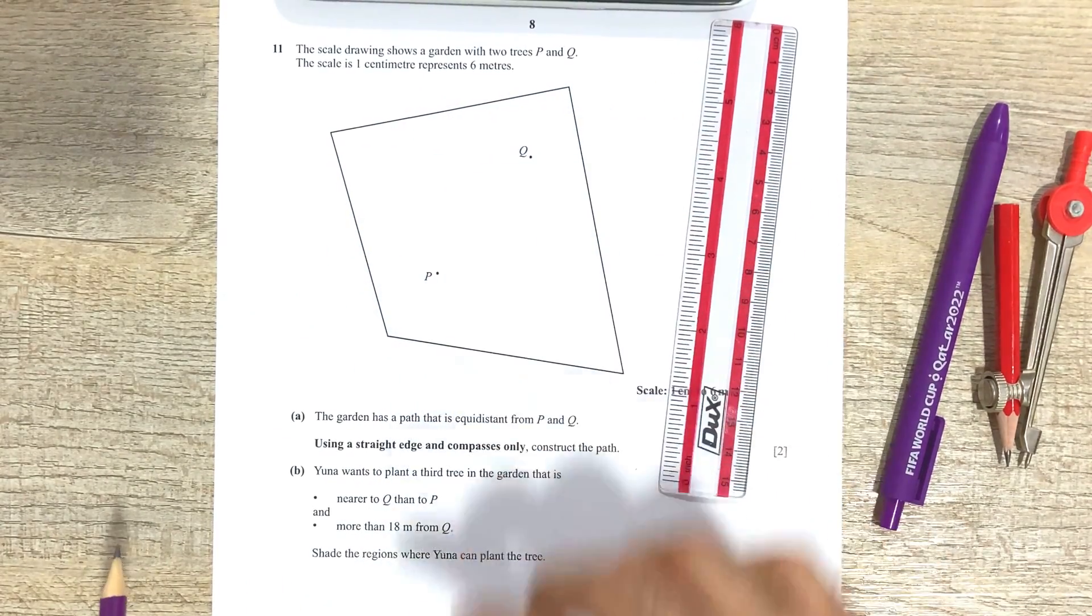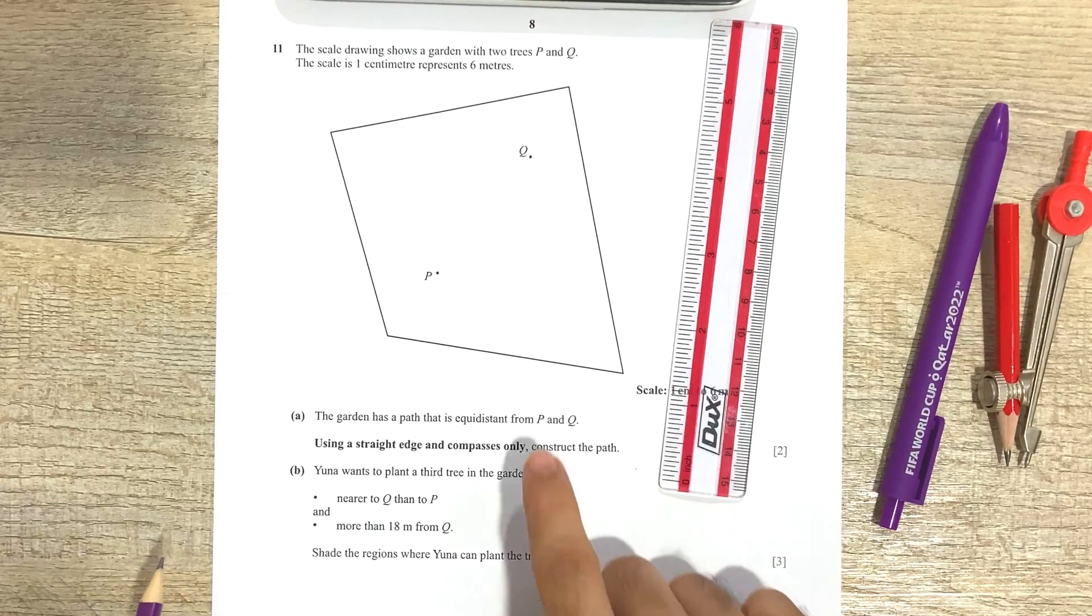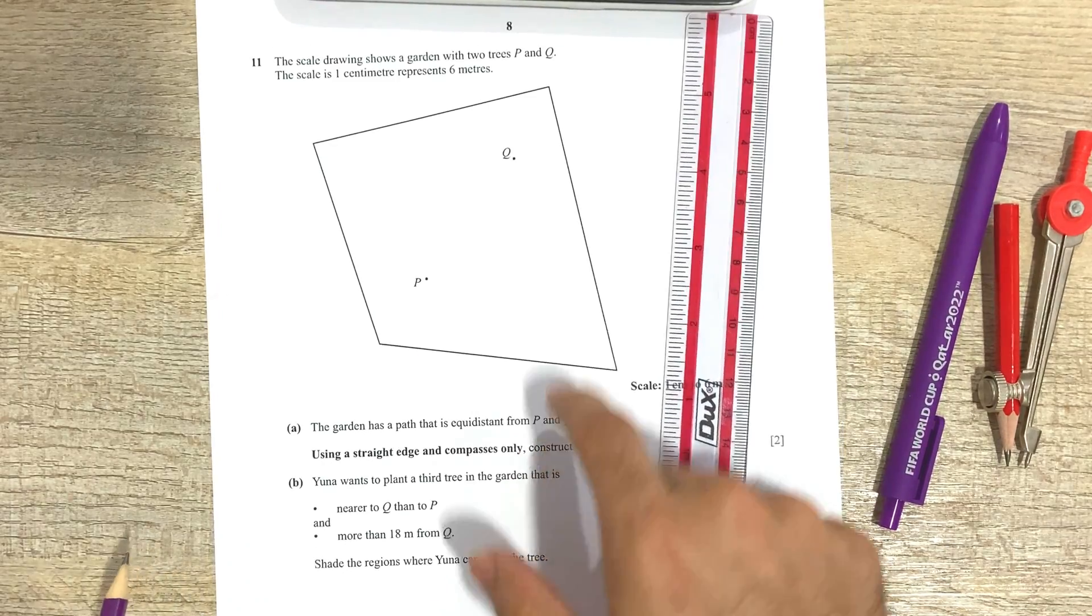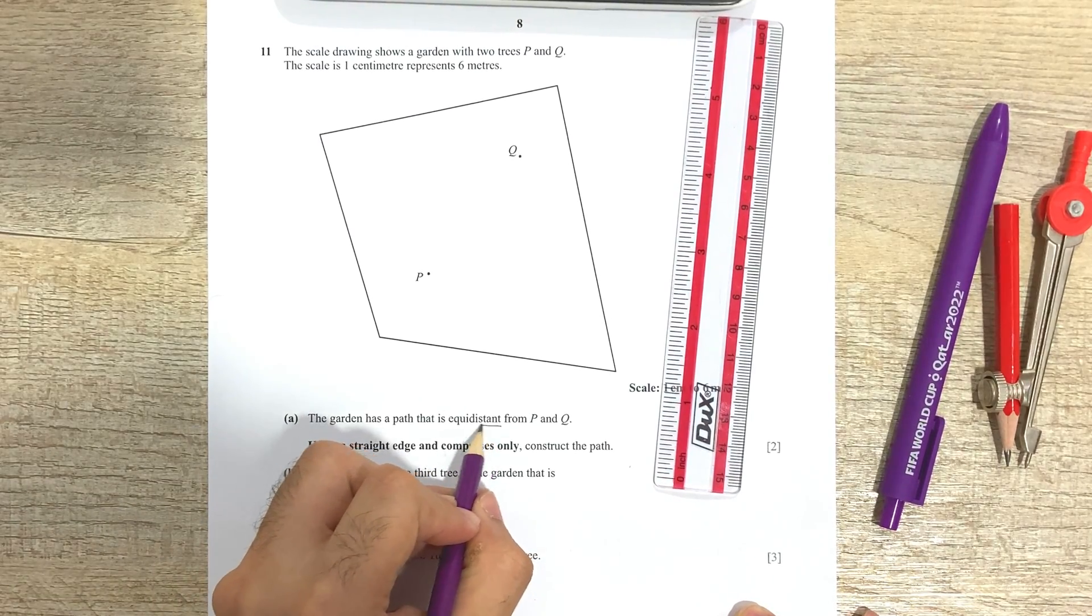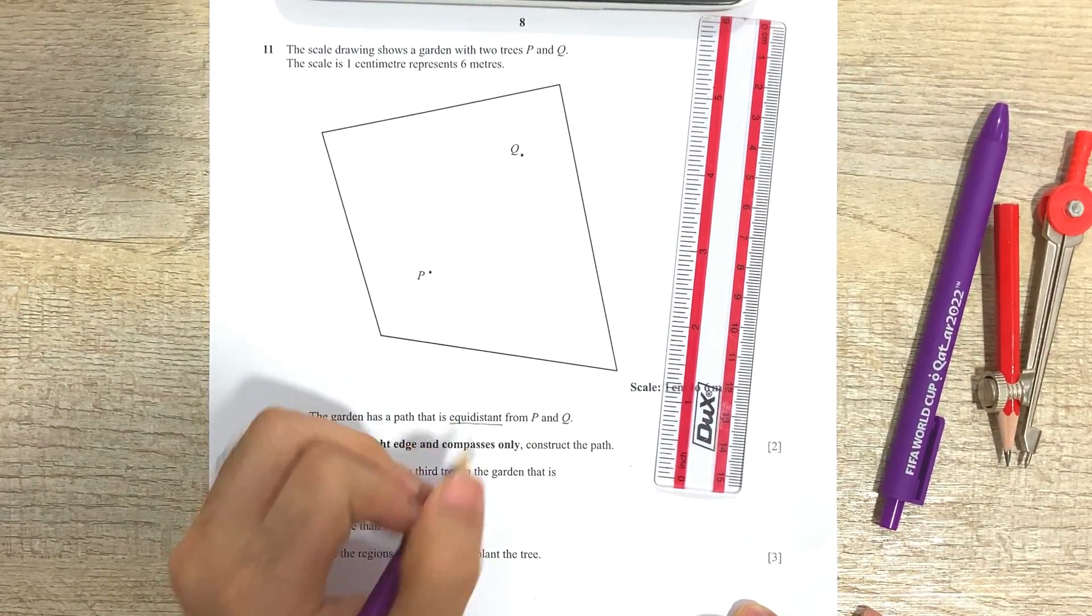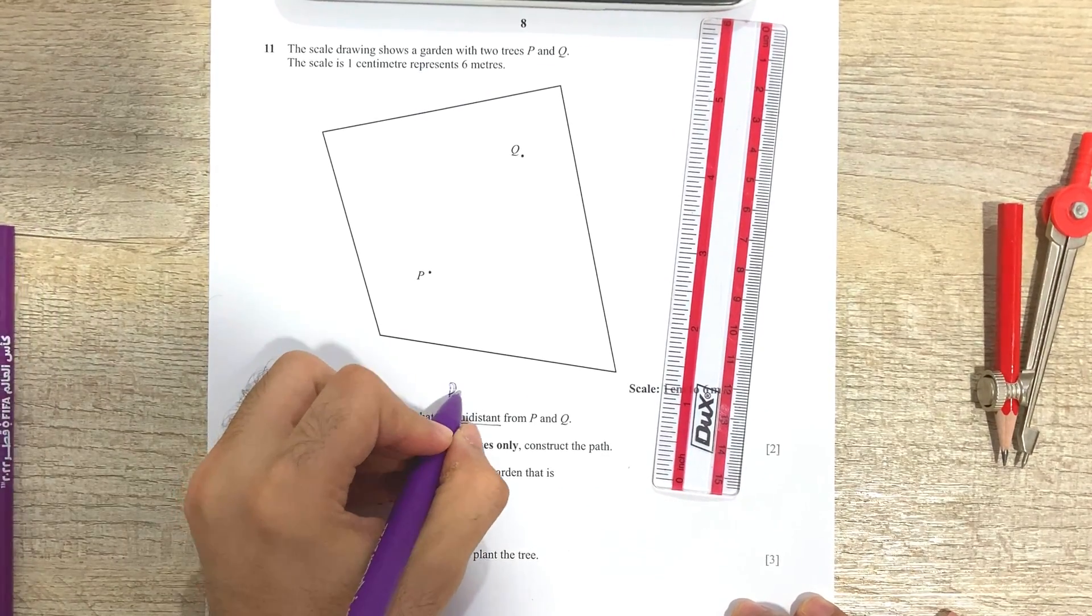The scale is one centimeter represents six meters, so that means whatever is one centimeter on paper is actually representing six meters. The garden has a path that is equidistant from P and Q. Okay, so we don't have that yet, we're gonna make that. And remember, whenever the question says equidistant from two points, what we make here is a perpendicular bisector.